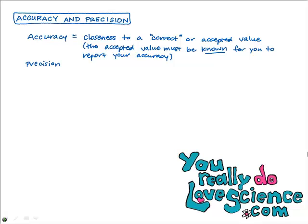Precision is a little bit different. Precision — I like to call it repeatability, or consistency in your measurements. Have you ever had a bathroom scale that's like five pounds off and it's really, really consistent? It's always five pounds off. It's not accurate, but at least it's consistent. Well, that bathroom scale is precise because its measurements are consistent.